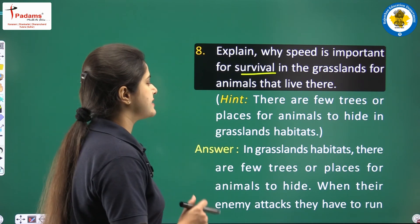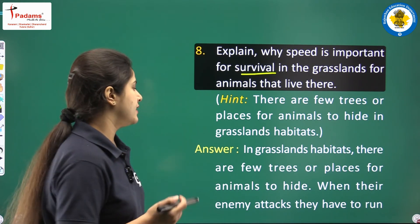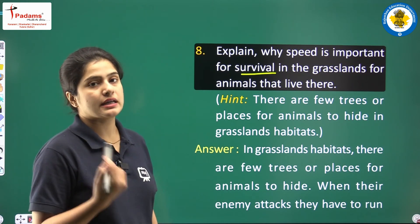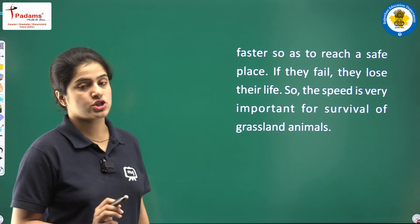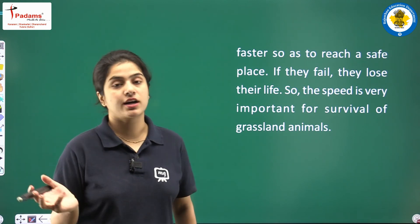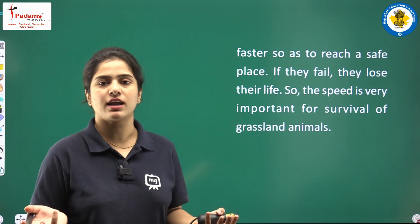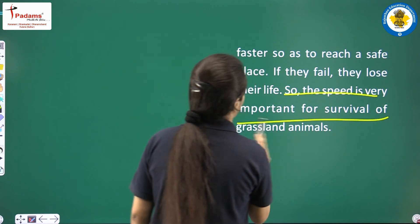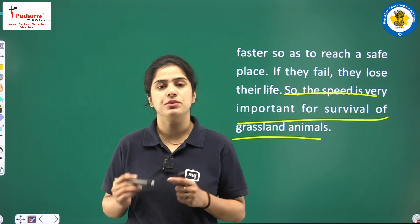Have a look: in grassland habitats, there are few trees or places for animals to hide. When their enemy attacks, they have to run faster to reach a safe place. If they fail, they lose their life. So speed is very important for the survival of grassland animals — both for prey and for predators.